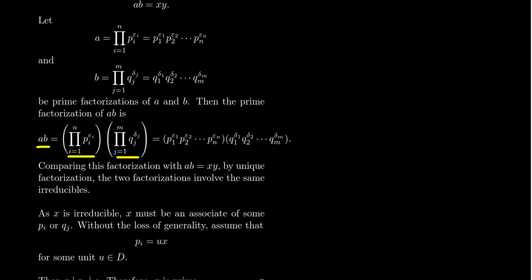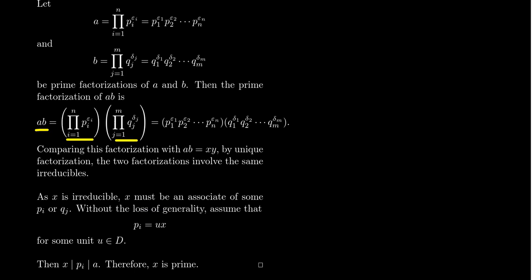So one of the irreducible factors that shows up in the prime factorization of xy is x itself. So by uniqueness of factorization, since x is irreducible, x must be an associate to either p_i or q_j for some i or some j. So without the loss of generality, let's assume that u is a unit so that u times x equals p_i. So x and p_i are associates inside of this prime factorization.